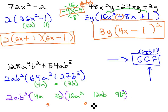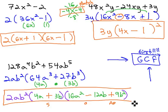And then I use SOAP to fill in the signs. S stands for same sign as the problem or plus, O is the opposite or minus, and the last one is always positive. We have now factored this problem completely.